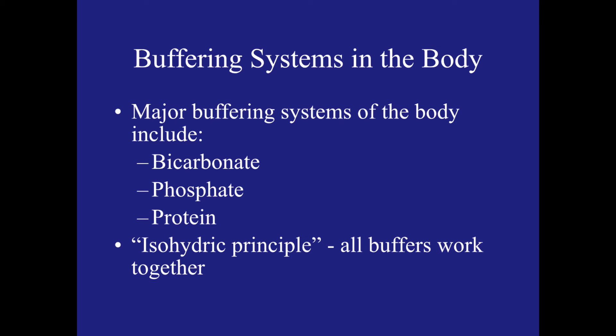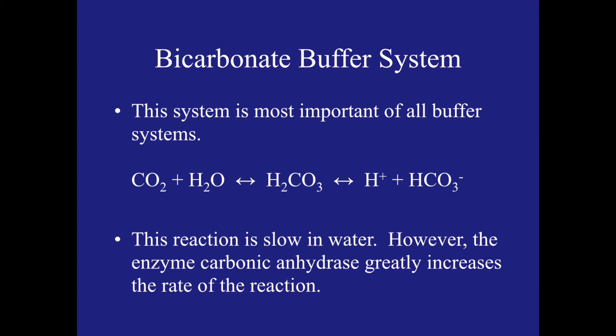In the body, many buffering systems work together to maintain pH. This idea is called the isohydric principle. The major buffering systems of the body include bicarbonate, phosphate, and protein. Out of all of these buffering systems, the bicarbonate buffer system is the most important.